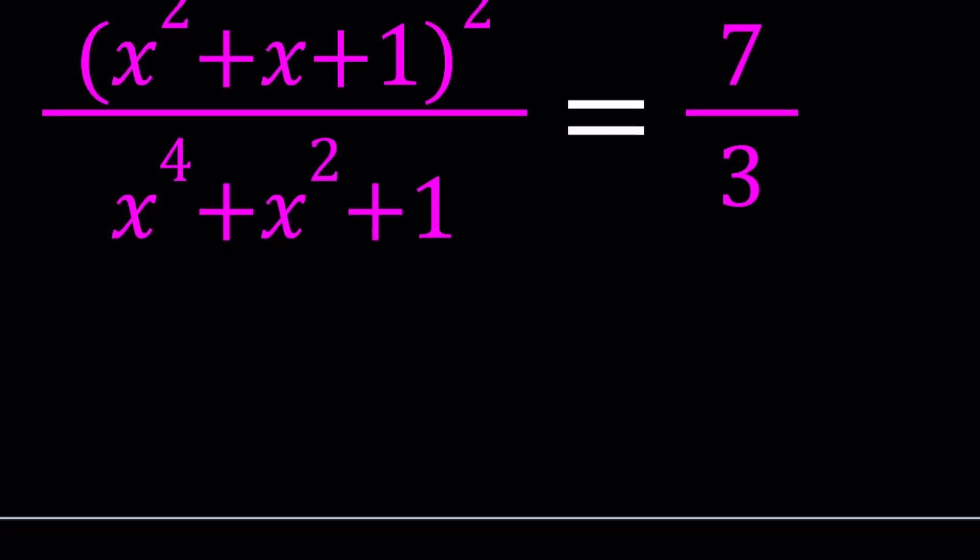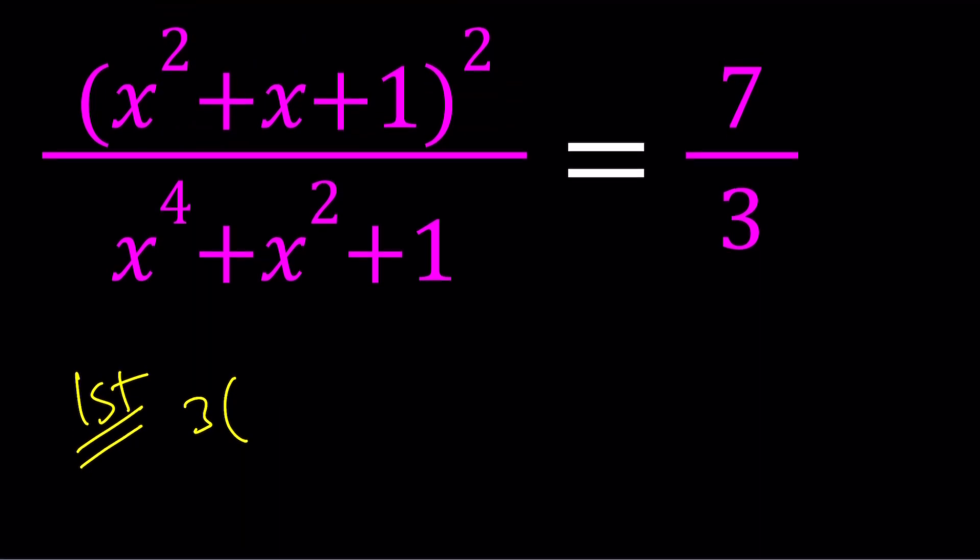So my first approach would be just to expand everything. We're going to get 3 times x squared plus x plus 1 squared. Remember the formula for a plus b plus c squared. That is x to the 4th plus x squared plus 1 plus 2x cubed plus 2x squared plus 2x, and then that is equal to 7 times x to the 4th plus x squared plus 1.